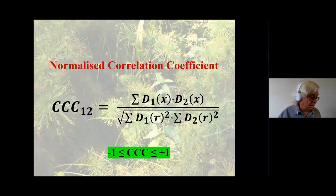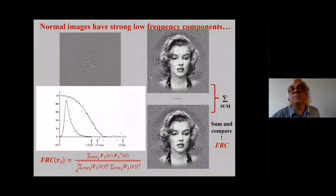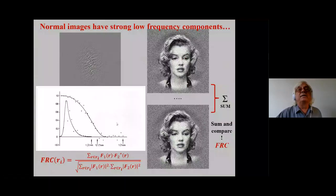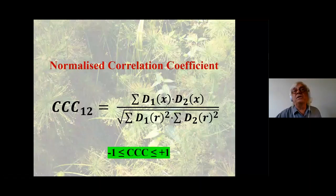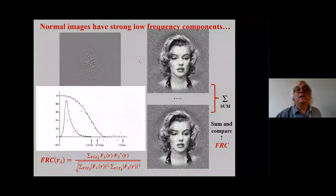We can use the normalized correlation coefficient to determine results resolution, but there's a problem: images typically have a lot of low-frequency components and not many high-frequency components. The correlation coefficient will be fully determined by the low-resolution information content. That's why I introduced the Fourier ring correlation more than 40 years ago. Instead of having one normalized cross-correlation coefficient between two images, you do a ring correlation — you look at rings in Fourier space and compare those images in Fourier space. This is a function of resolution in Fourier space, rather than a single value.